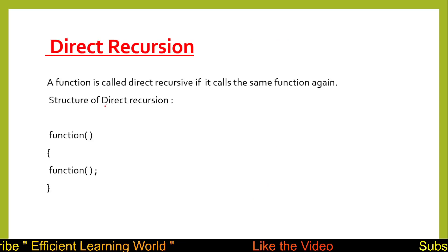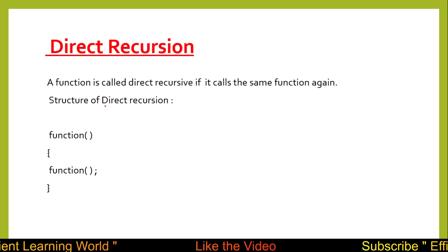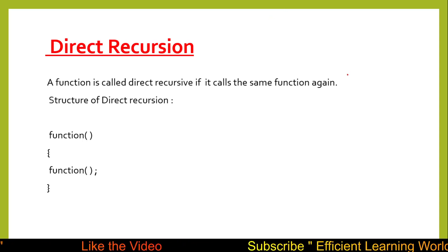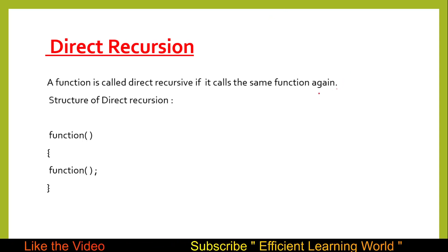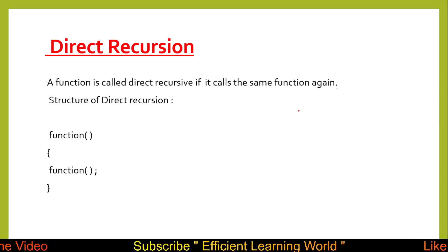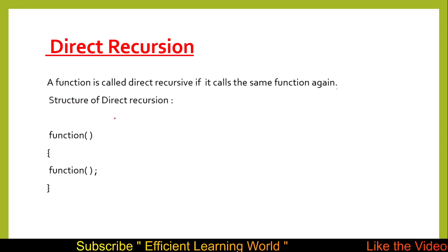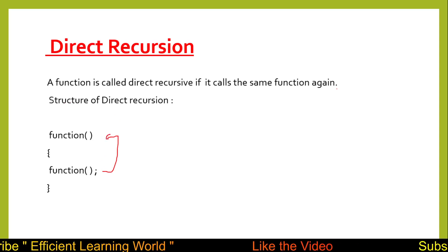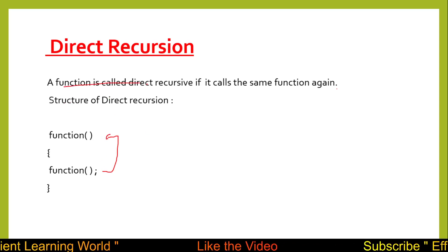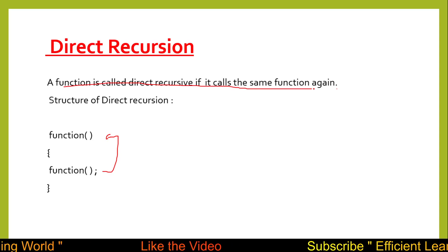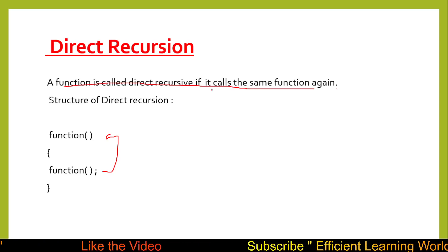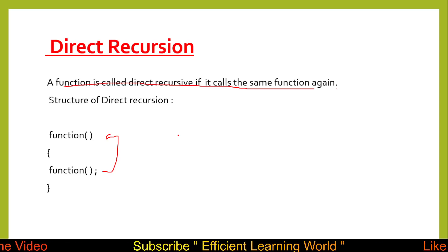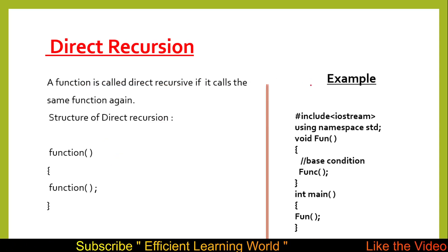Direct recursion: a function is called directly recursive if it calls the same function again and again until the base condition or termination condition becomes false. The base condition is a necessary part in each and every recursion program. So you can say a function is called directly recursive if it calls the same function again — this is called direct recursion.